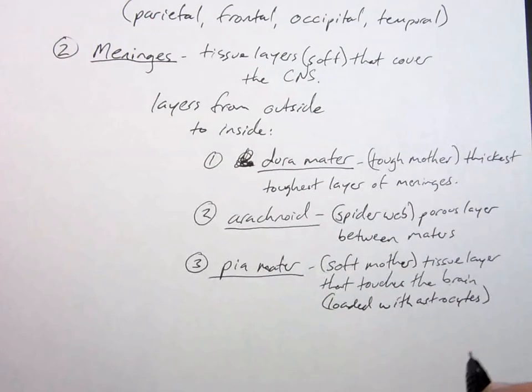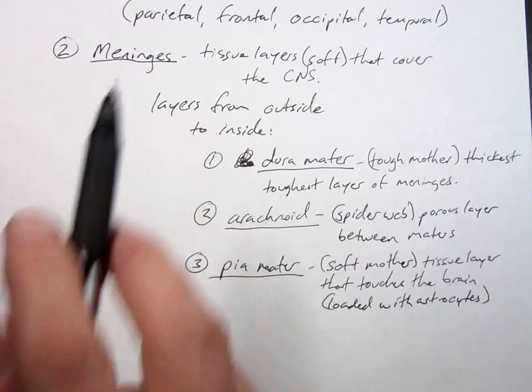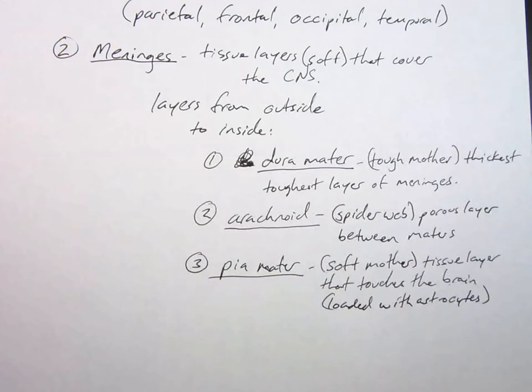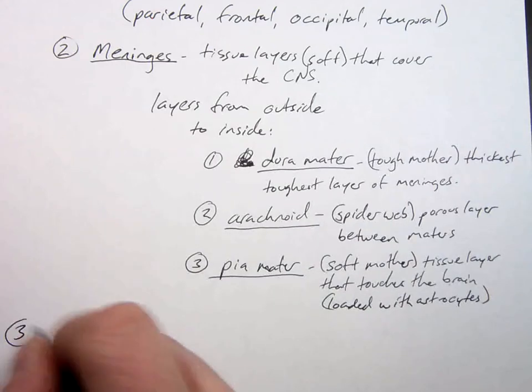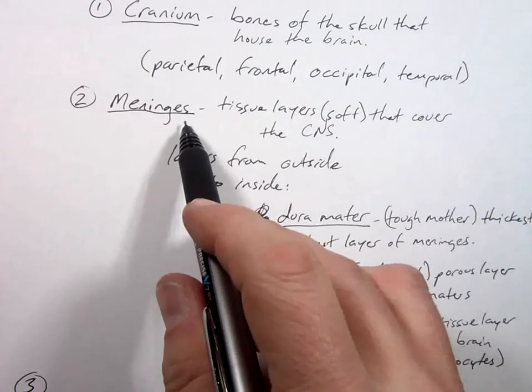What do we call an inflammation of the meninges? Meningitis. So viral or bacterial infections of the meninges are meningitis. And why are they so difficult to fight? Because it's difficult for antibiotics to filter through the blood brain barrier to get to the infection, so that makes it tough to fight.